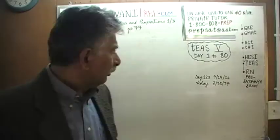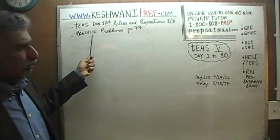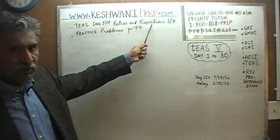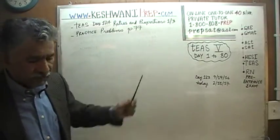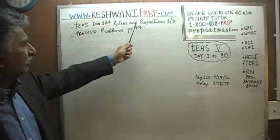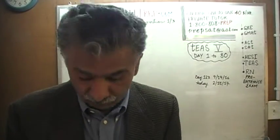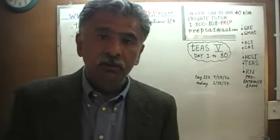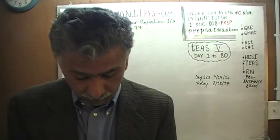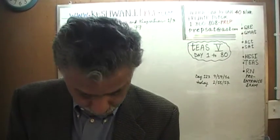Let's begin, shall we? We are on page number 77. On page 77, we are going to do some practice problems dealing with the concept of ratios and proportions. We are going to do three videos on this topic. This is the first video in the series of three — days 124, 125, and 126 will deal with the concept of ratios and proportions. Turn to page 77. It is absolutely essential that you have the book in front of you, otherwise you will not follow my work. I am not going to put the entire problem on the blackboard.